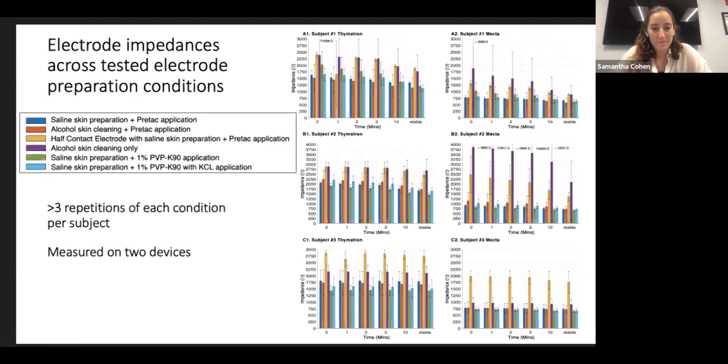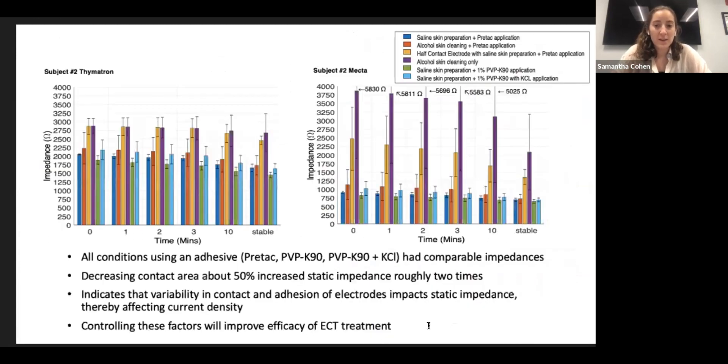So focusing in on one exemplary subject, we can see that all conditions with an adhesive substance had comparable impedances. We also see the decreasing surface area increases static impedance, and that the concentration of ions had no significant effect on impedance.